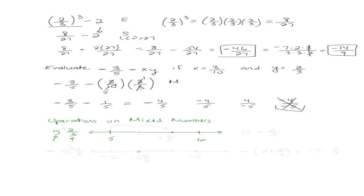Now how do I know exactly where between 5 and 6? The denominator tells me how many spaces to break it up into. So I'm going to break up the space between 5 and 6 into 3 spaces: space 1, space 2, and space 3. And then we're just going to go two spaces over. So right there is 5 and 2 thirds.